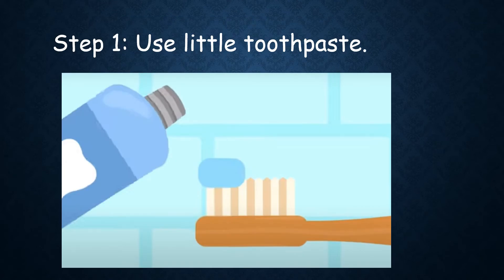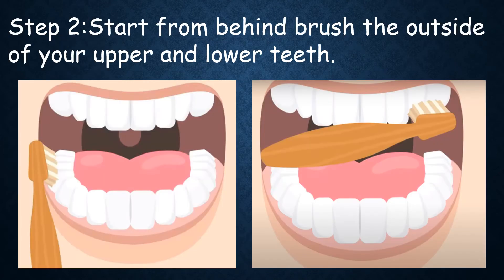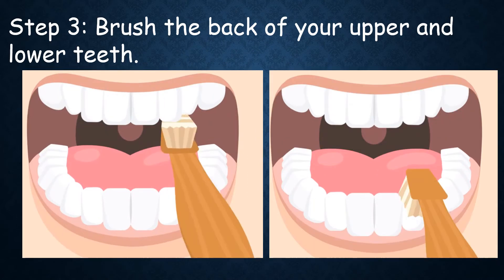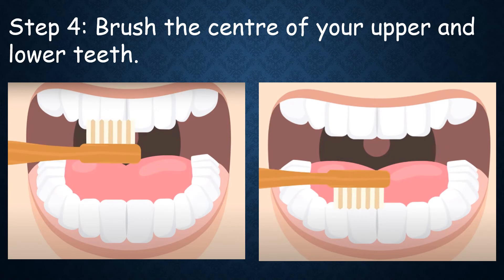Step 1: Use a little toothpaste and put it on your toothbrush. Step 2: Start brushing your teeth from behind and brush the outside of your upper and lower teeth. Step 3: Brush the back side of your upper and lower teeth. Step 4: Brush the center of your upper and lower teeth.